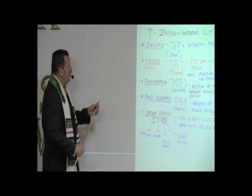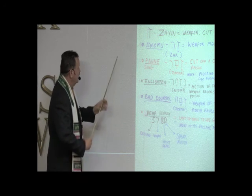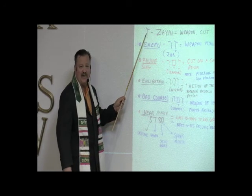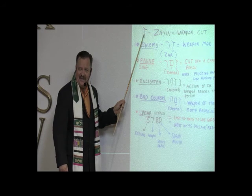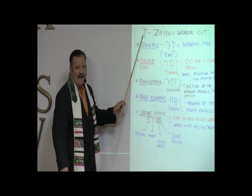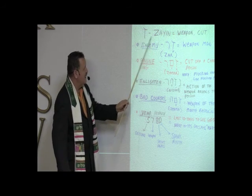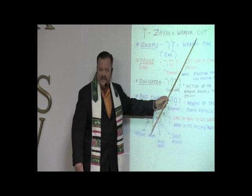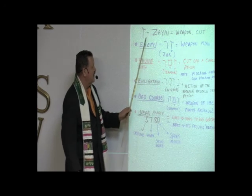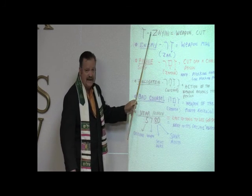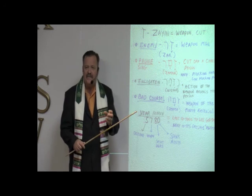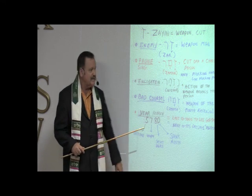So we're looking at this particular letter. It looks like a T with a crooked hat — that's the Zayin. This letter means 'weapon' or 'to cut off.' We're going to look at some words in the Bible that use this so we can get an idea of how it's being used.